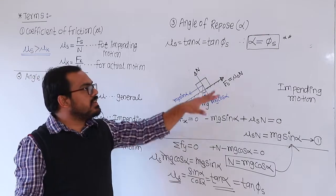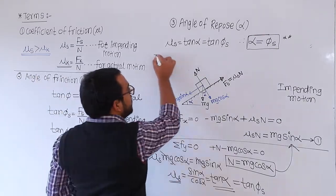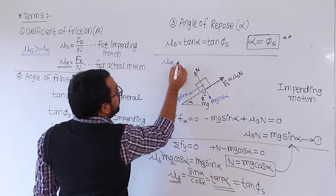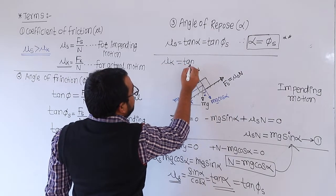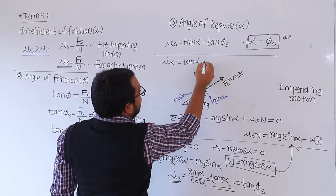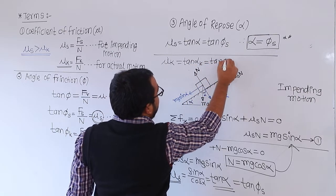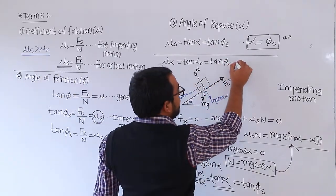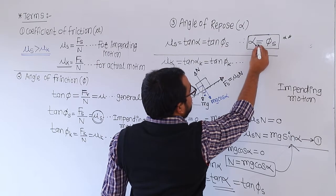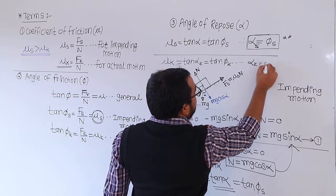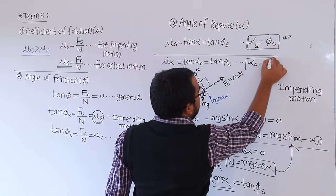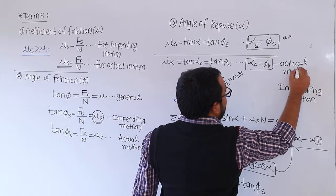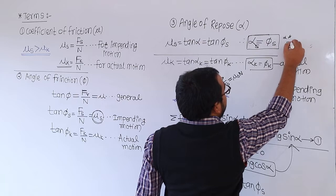In a similar way, if there is actual motion instead of impending motion, then mu_s becomes mu_k, and mu_k equals tan of alpha_k, which equals tan of phi_k. This relation is for actual (kinetic) motion, whereas the previous one was for impending motion.